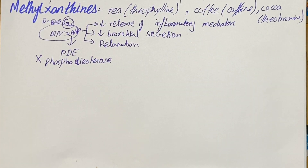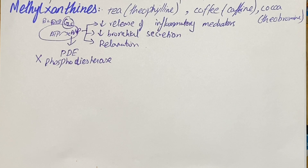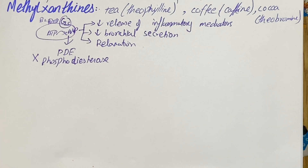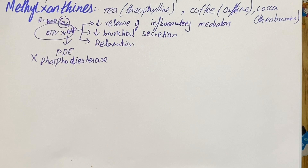In this way, methylxanthines ultimately help in treating asthma. This is how methylxanthines work: they inhibit the phosphodiesterase enzyme, which is required for the degradation of cyclic AMP. Now if we talk about the pharmacodynamics of methylxanthines: